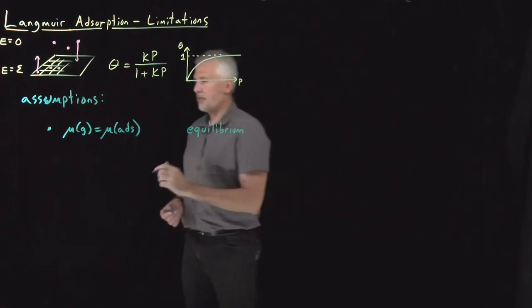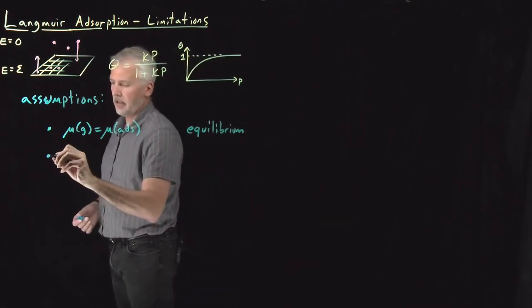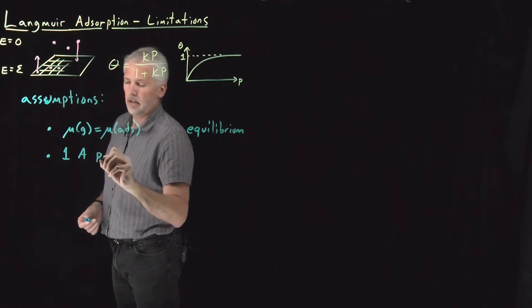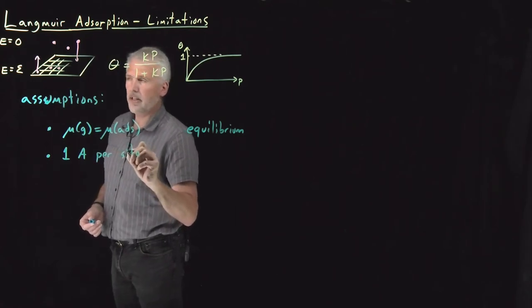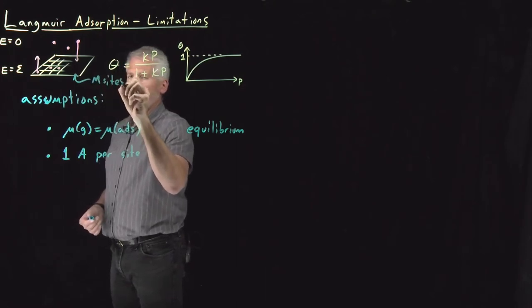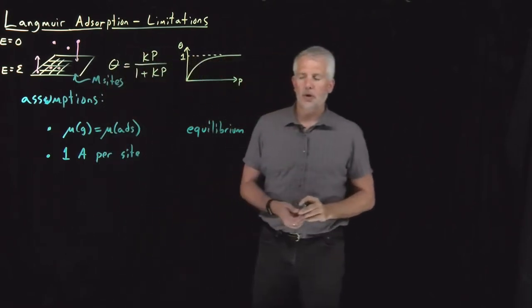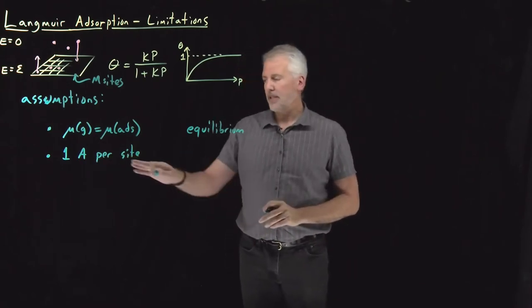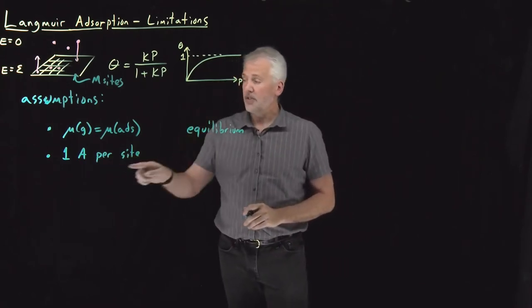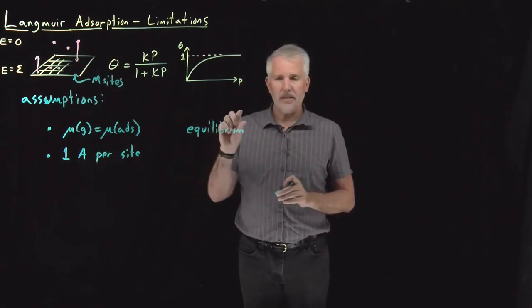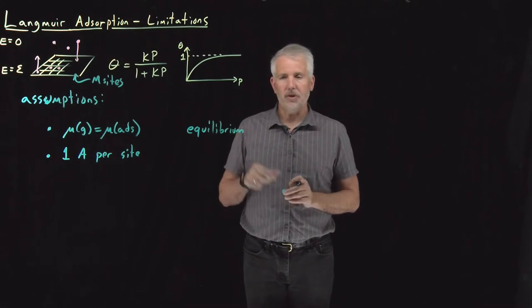Another assumption we made is that among these m total sites on which molecules can adsorb, we can't ever put more than one molecule on a site. That may seem like a fairly harmless assumption. We can make those boxes small enough or those chemical binding sites small enough that certainly no more than one molecule could fit.